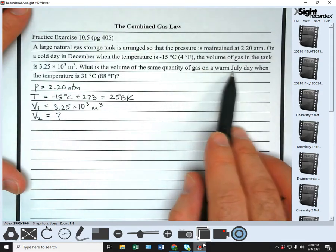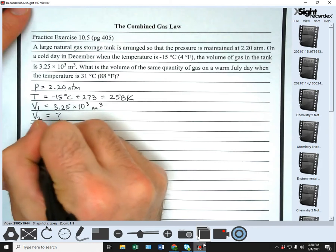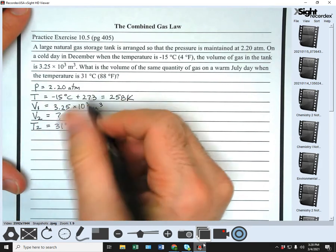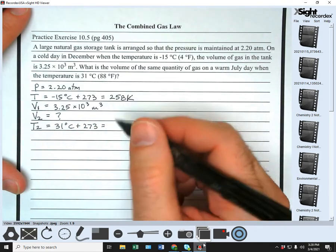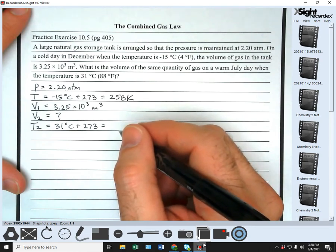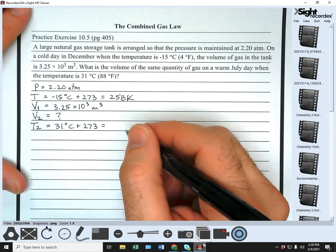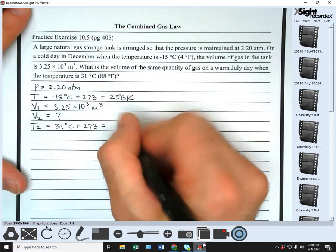On a warm July day, when the temperature is, so we've got T2, 31 degrees Celsius, which comes out to be 304K.